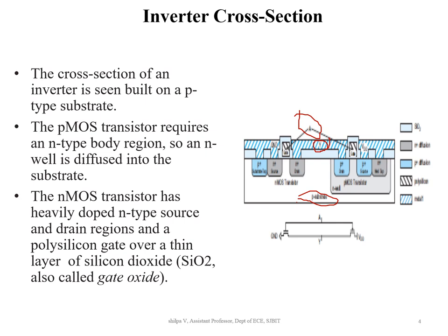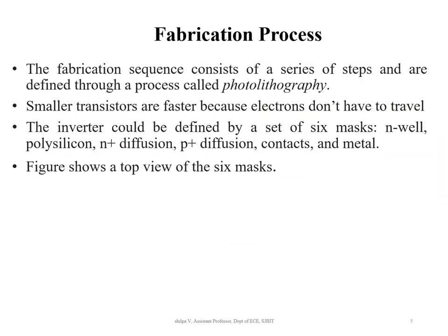To form this structure, many process steps must be followed during fabrication. The fabrication sequence consists of a series of steps in which the layers of chips are defined through a process called photolithography. The inverter can be defined by six masks.